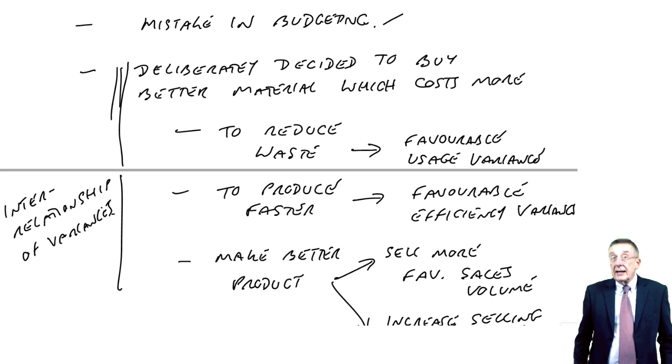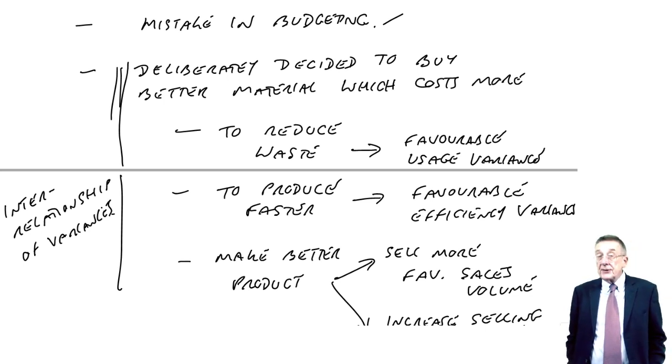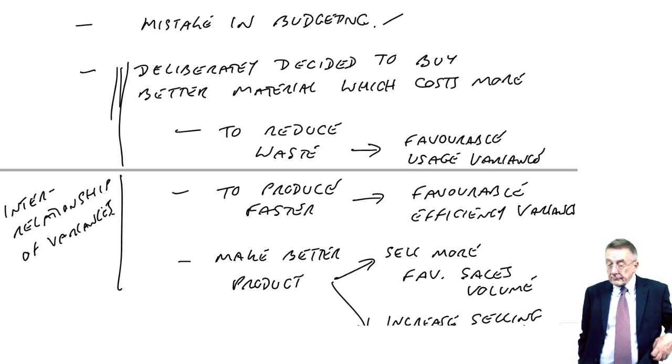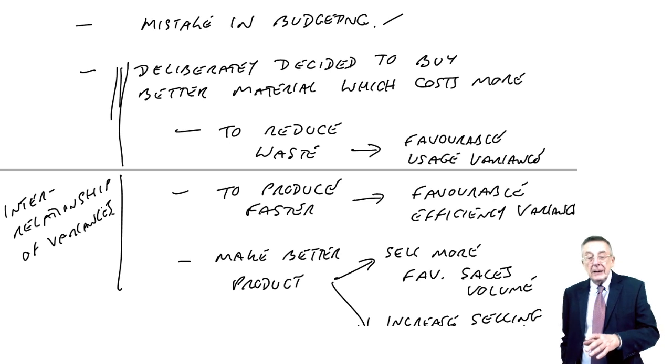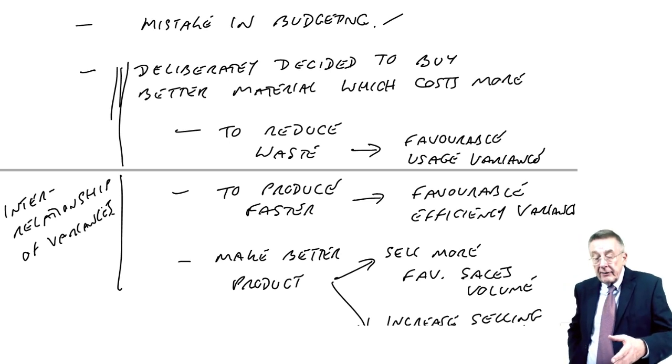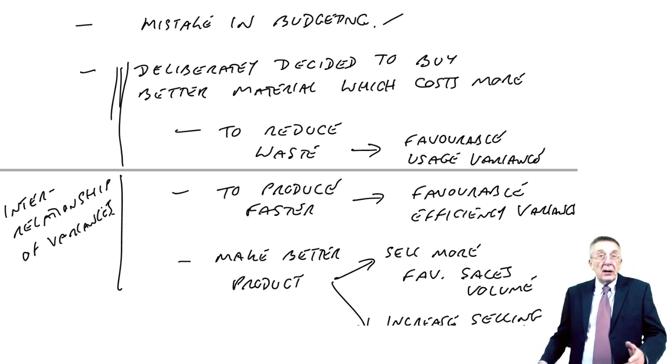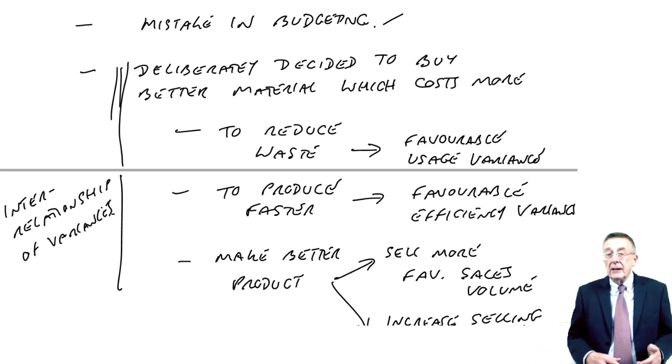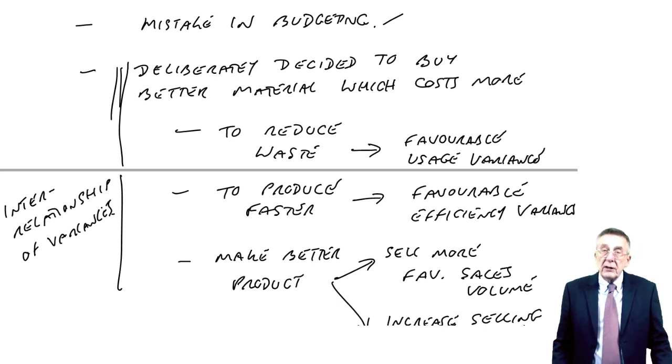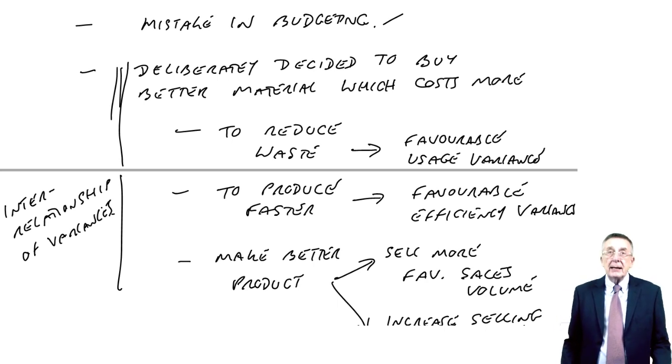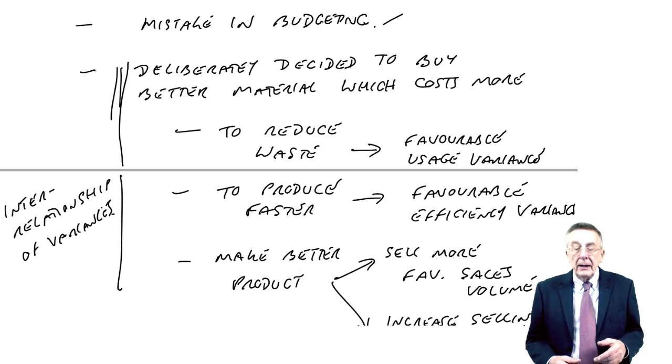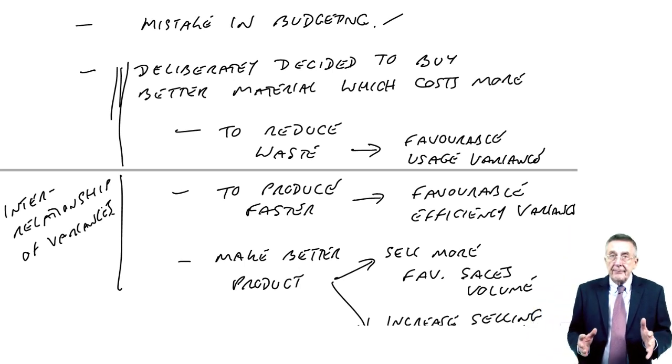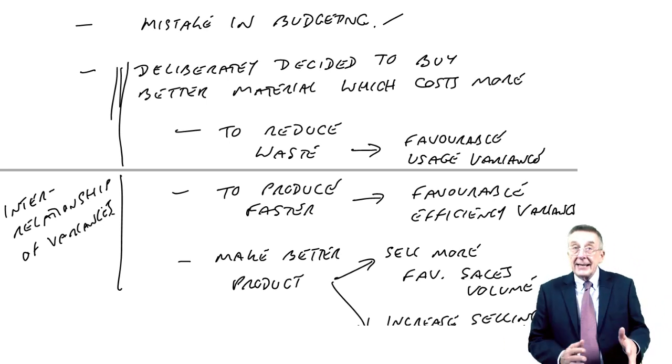And in fact because of that you will see in the next chapter one of the advanced variances is something called planning and operational, where we analyze the variances even further and we say well how much of the variance is caused because we changed our plans, we deliberately bought more expensive material in order to save money somewhere else, and how much of the variance was caused by things like bad buying, where it could be a combination of the two. So it's not as bad as it sounds. I think you'll quite enjoy it but that's the next chapter.